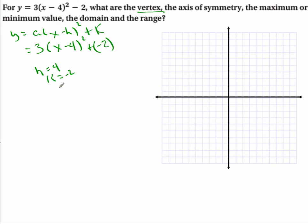I see that h is 4 and k is -2. So the vertex is (4, -2). 1, 2, 3, 4. So that's my vertex.